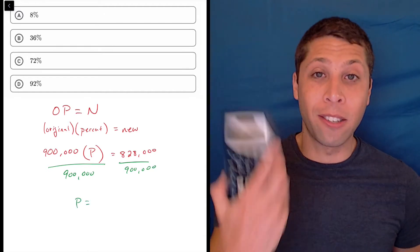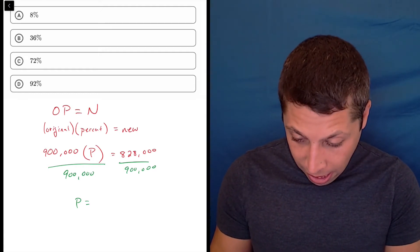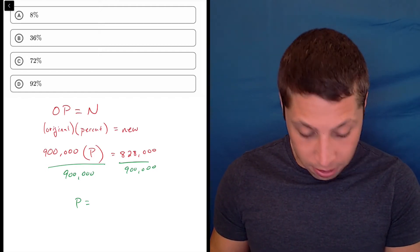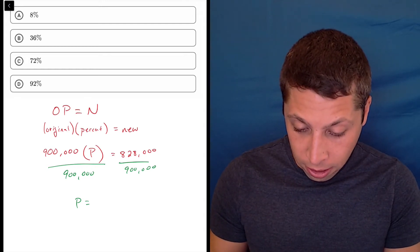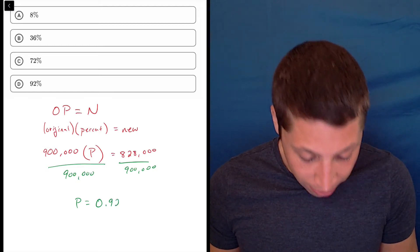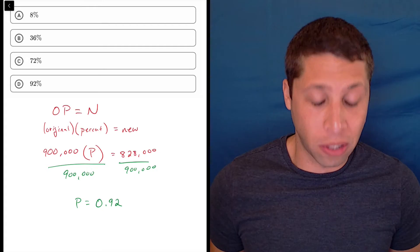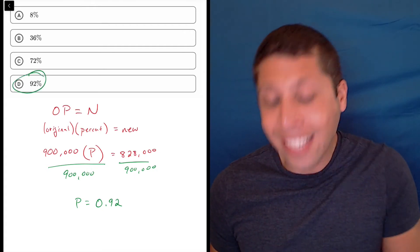And so P is going to be, this is where I'd use this as a normal calculator, 828,000 divided by 900,000. Make sure you get all those zeros, and you get P is 0.92, which is, like I said, that's a decimal version of our percentage, so that really is 92%.